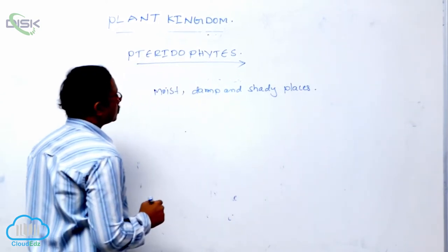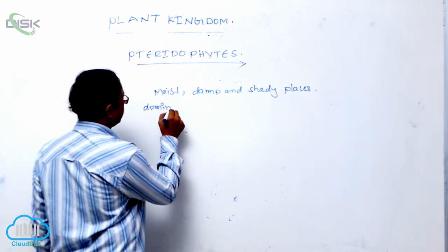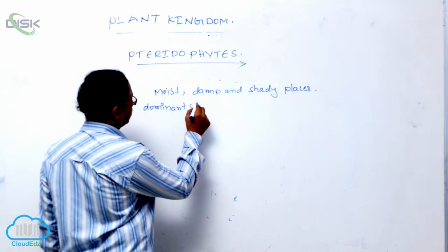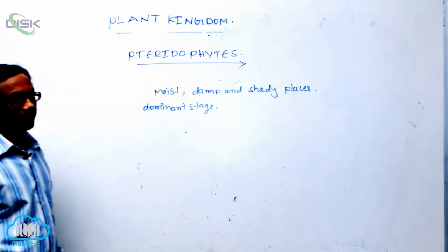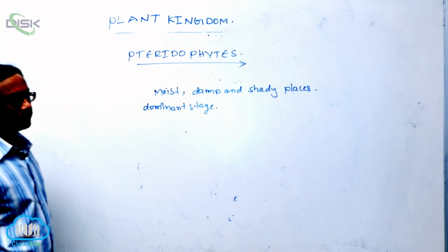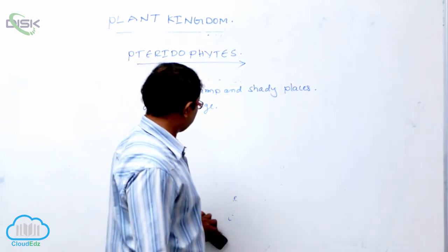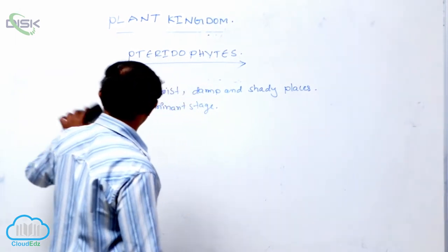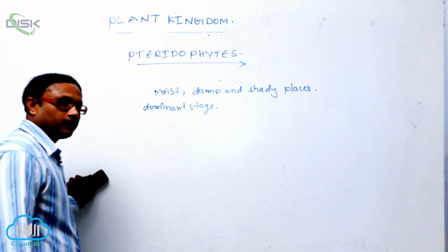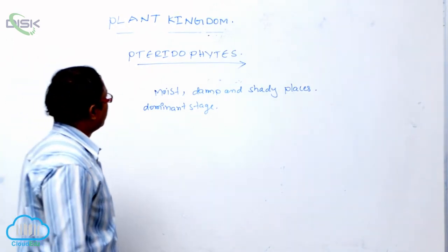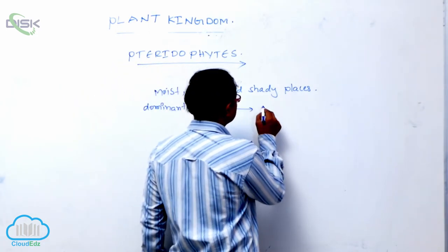In bryophytes, the dominant stage is the gametophyte, and the sporophyte depends on the gametophyte. It is a partial parasite for nourishment, so the sporophyte acts as a partial parasite on the dominant gametophyte in bryophytes. But in pteridophytes, the dominant stage is the sporophyte.